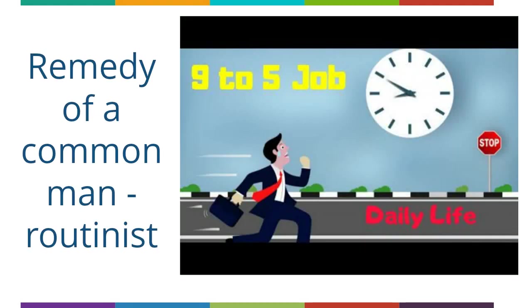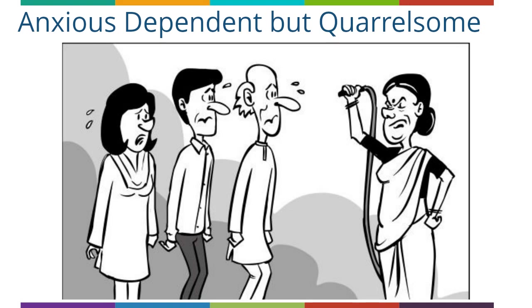These people are 9-to-5 job type people, working in the same company for years without change. Their life is routine and they don't like any changes in their routine. They are very principled and practical people. They don't think emotionally - they are more rational and logical, taking decisions from their mind. Their entire life goes into thinking about the family, and they are anxious about the family. Something happening to family members can freak them out, and this anxiety stems from their dependence on family members.